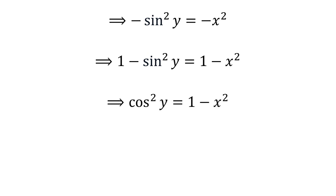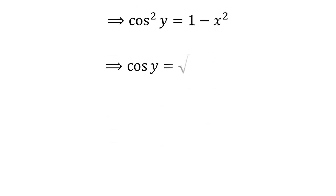Now, 1 minus square of sine of y is equal to square of cosine of y, by application of the famous trigonometric identity: square of sine of y plus square of cosine of y is equal to 1. Taking the square root of both sides gives us cosine of y is equal to square root of 1 minus square of x.